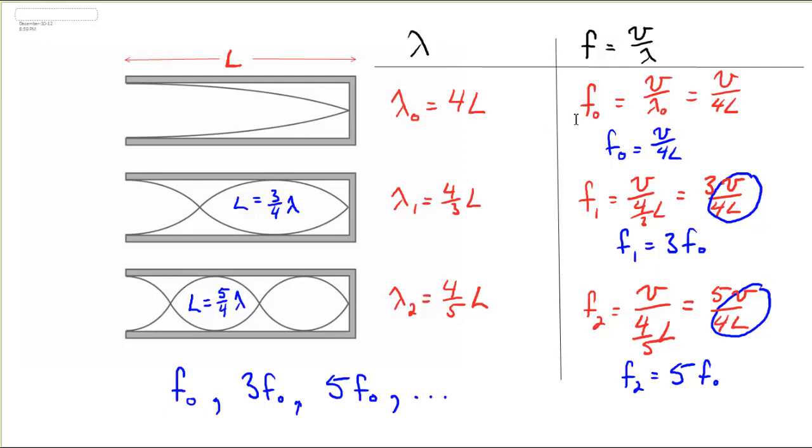Now if we repeat the same analysis that we did with the pipe that was open on both ends, we'll continue on and we'll find that the last wavelength, lambda 2, is four-fifths L. Now why is that? Inside this pipe, I've got a crest, a trough, and then it goes up to another crest. So there's one full wave for the crest and the trough, and then an additional quarter. So one length contains one and a quarter waves, or five-fourths of a wave. And if I solve that for lambda, I get lambda 2 is four-fifths L.